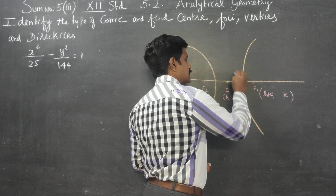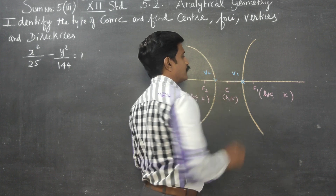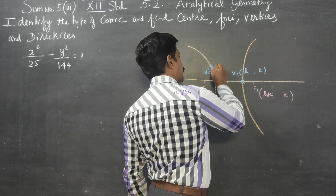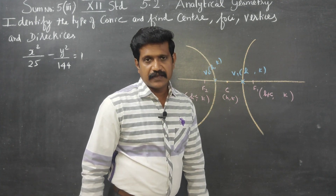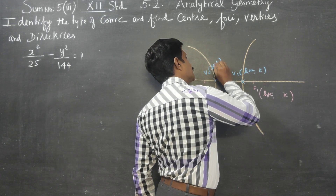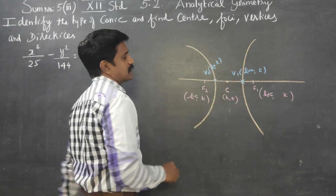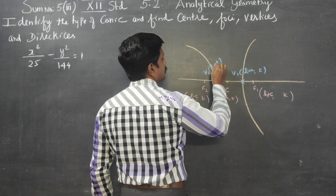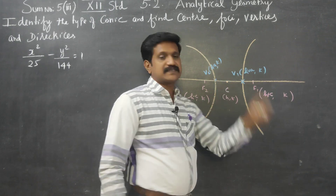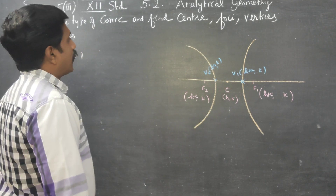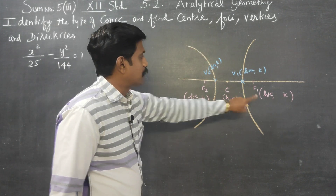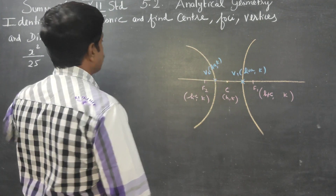Then coming to the vertices: V1 and V2. The vertices formula is (h ± a, k). For the directrices, the formula involves orientation along the x-axis. The center formula is (h, k).